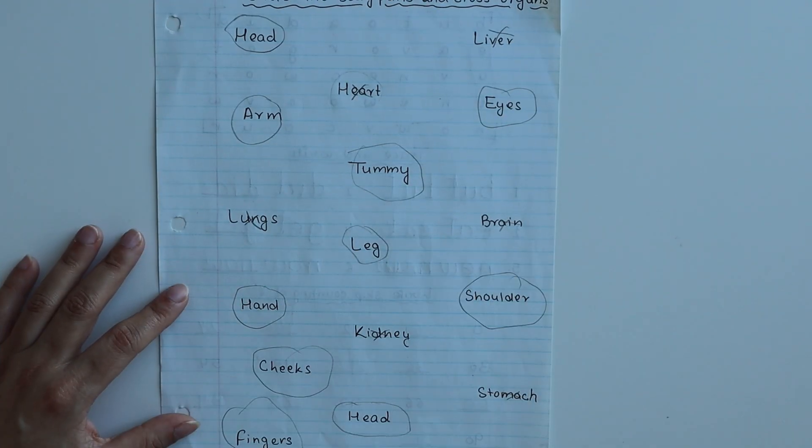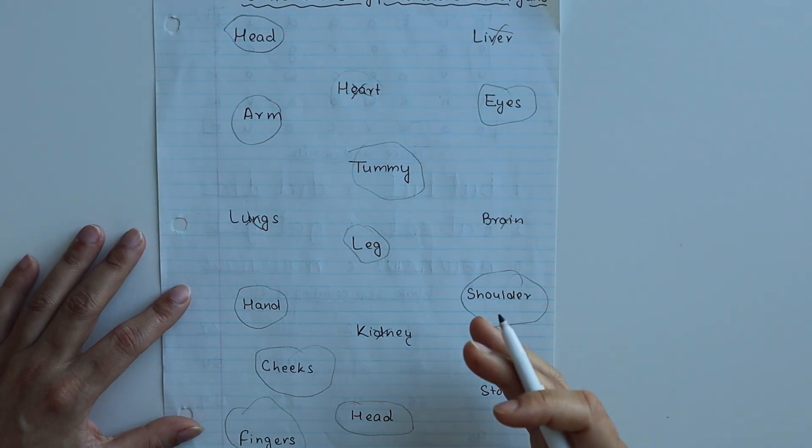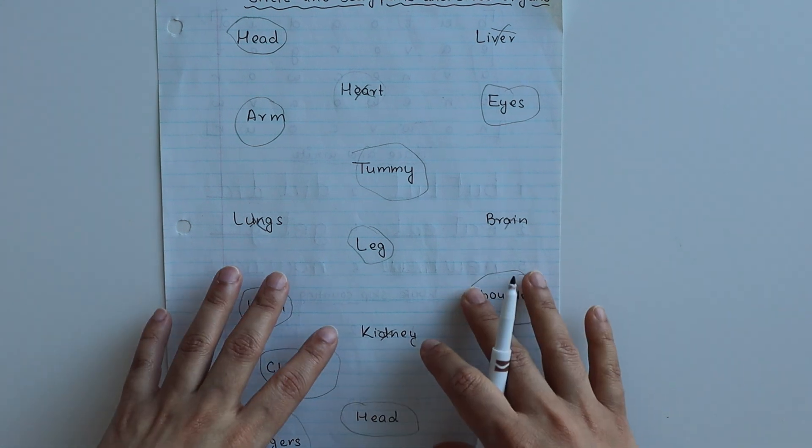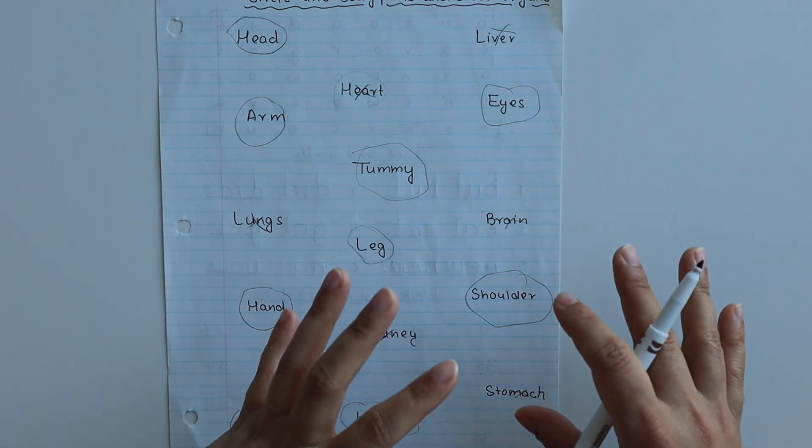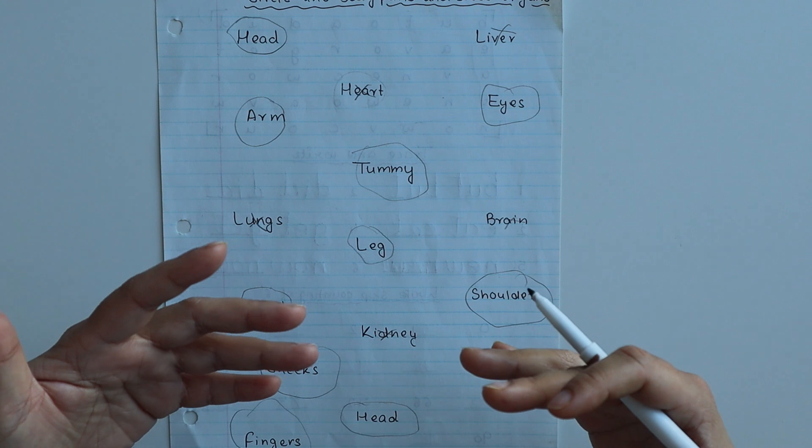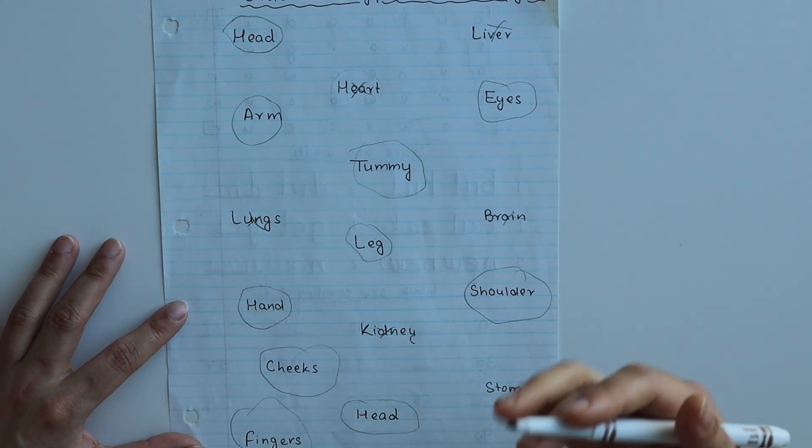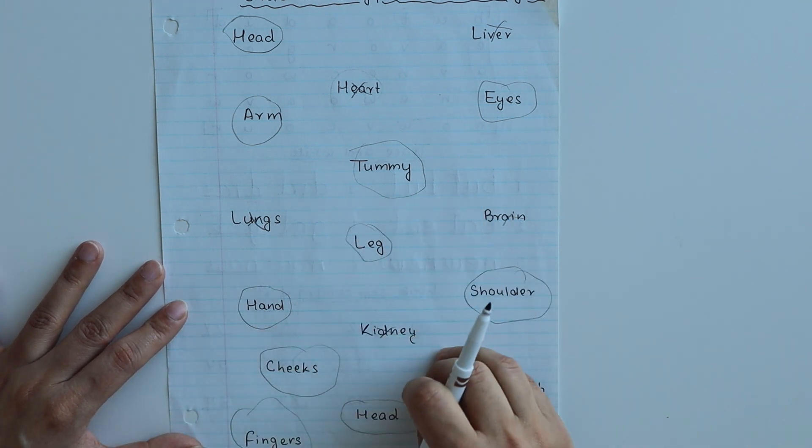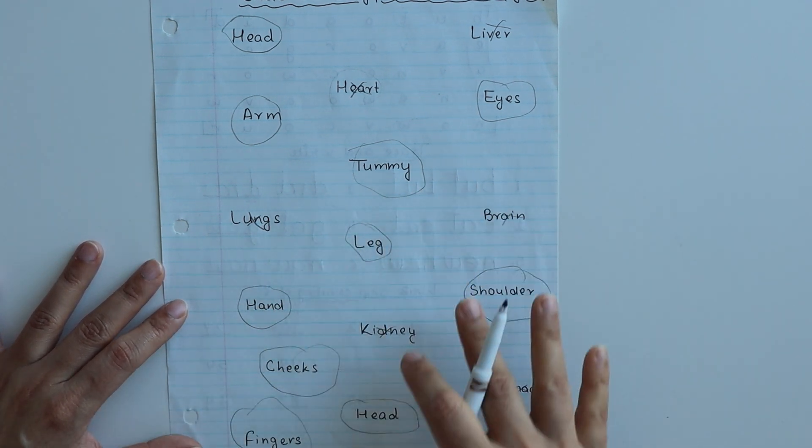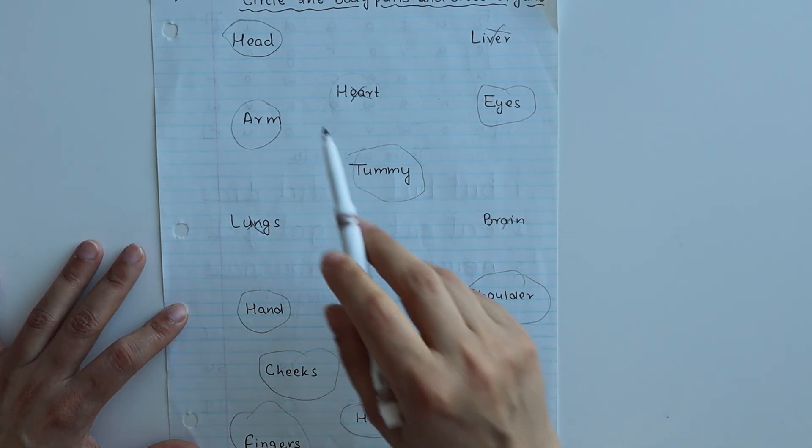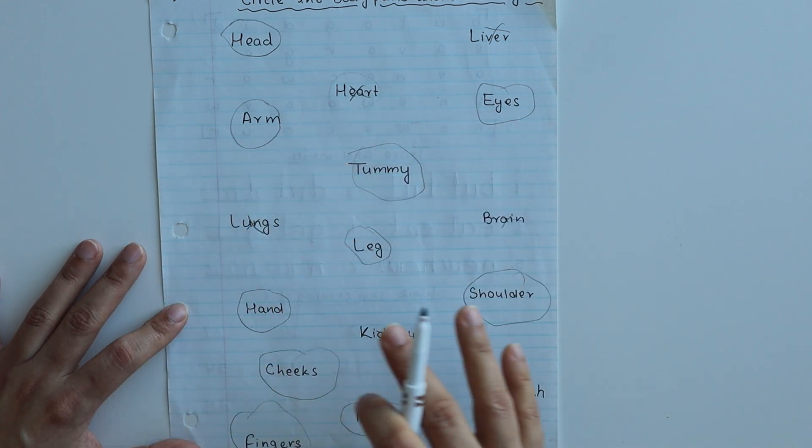This worksheet is to differentiate body parts and organs. Generally what happens is parts of the body and organs get confused. This worksheet will be helpful. I've written some parts of the body and some organ names, and you have to circle body parts and cross organs.